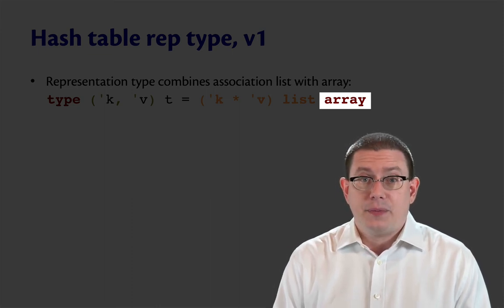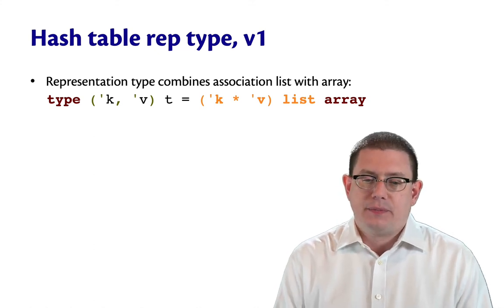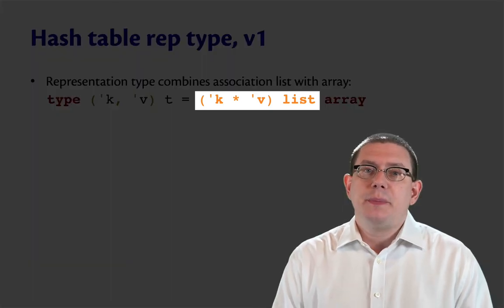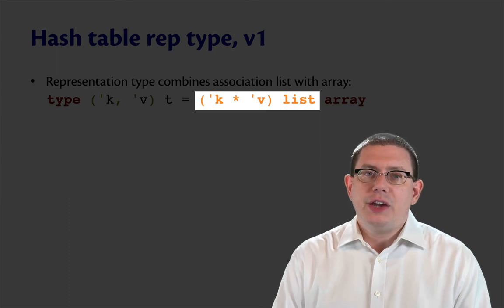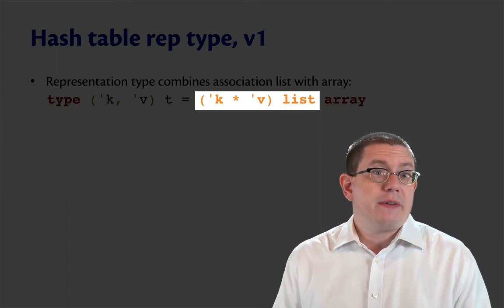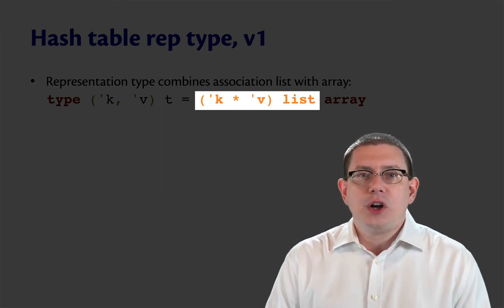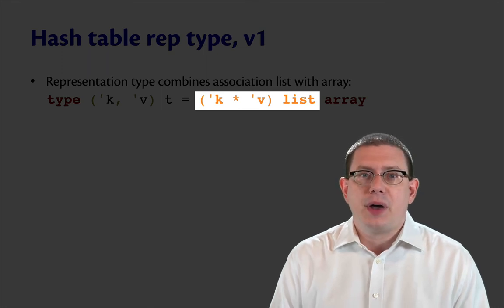Now, at that bucket where we store hashed keys, there's going to be an association list. In that association list, there are going to be multiple key value bindings, potentially, or it might be empty. And the keys aren't necessarily all the same because there could be collisions of different keys in that same bucket.